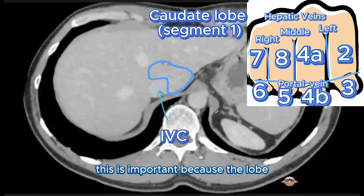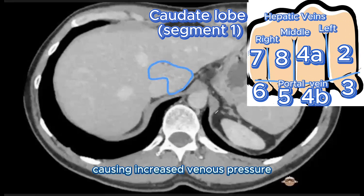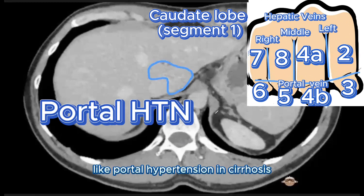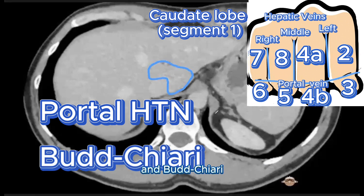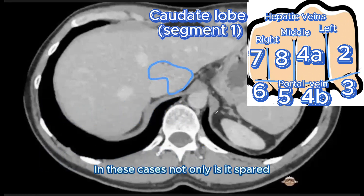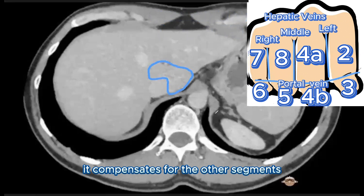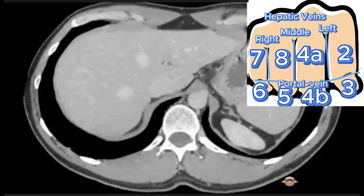This is important because the lobe tends to be spared in diseases causing increased venous pressure, like portal hypertension, cirrhosis, or Budd-Chiari syndrome. In these cases, not only is it spared, it compensates for the other segments by growing in size. Now we locate segment 2.